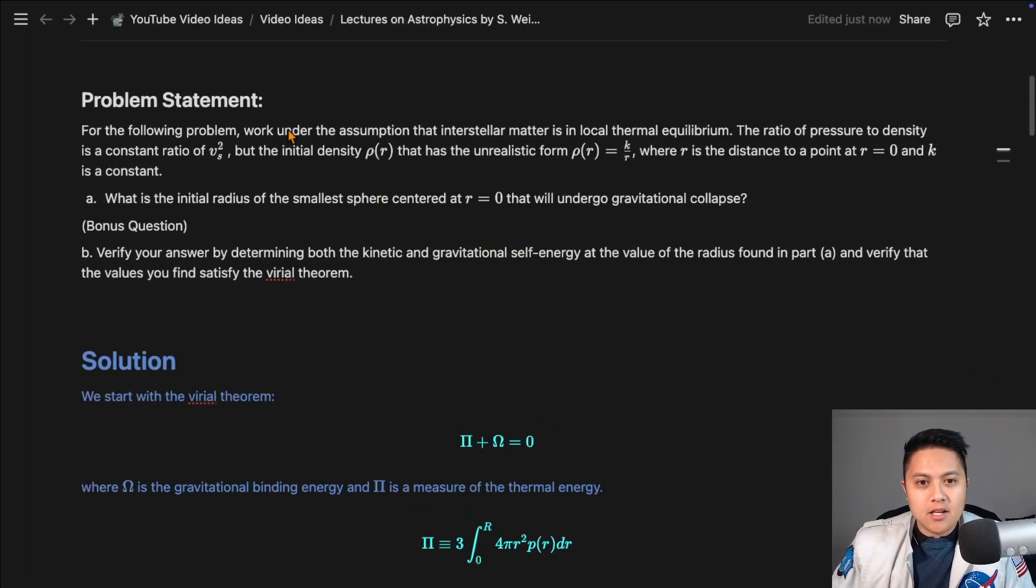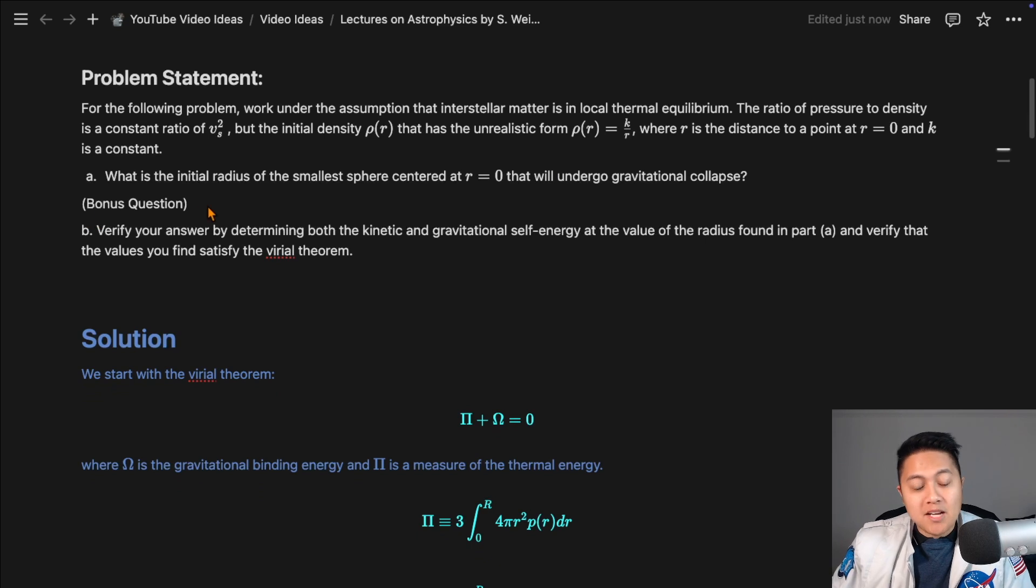So this is the problem here. It says, work under the assumption that interstellar matter is in local thermal equilibrium. The ratio of pressure to density is a constant ratio of Vs squared, so that's essentially just the speed of sound in the medium squared. But the initial density rho has the unrealistic form rho of r equals k over r. And so the question is basically asking what is the initial radius of the smallest sphere centered at r equals zero that will undergo gravitational collapse.